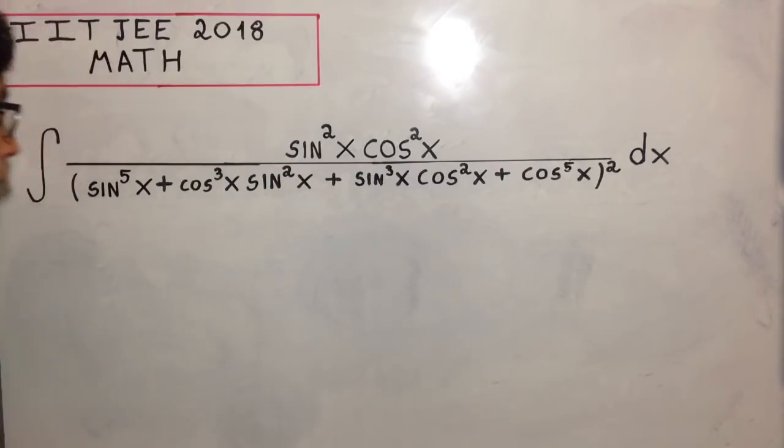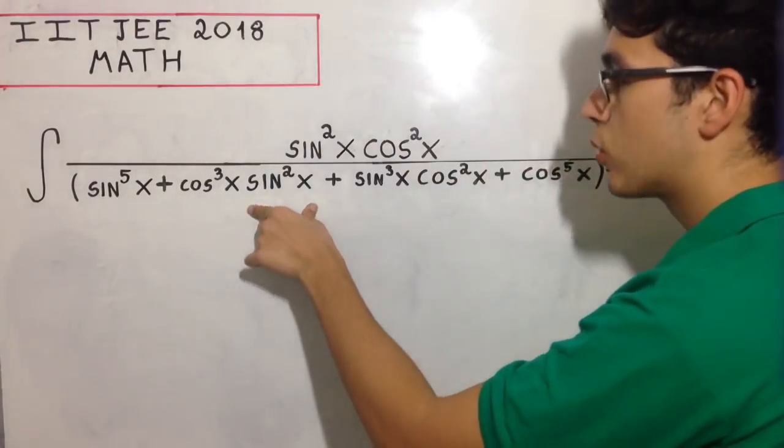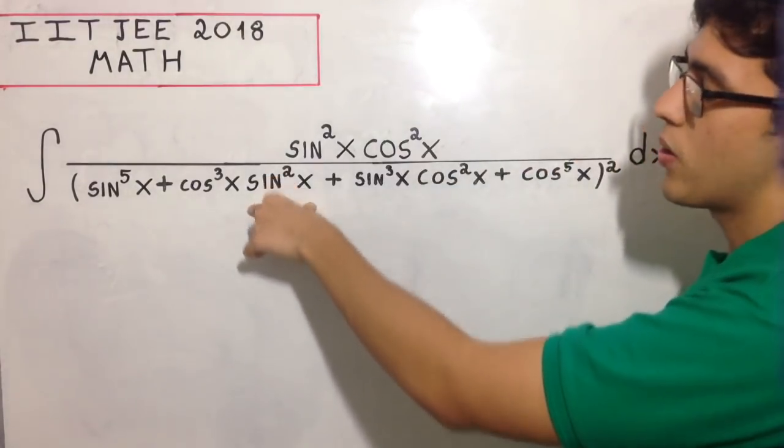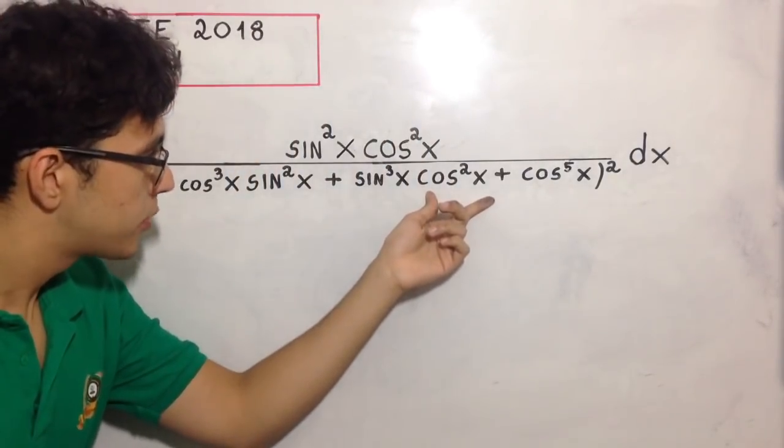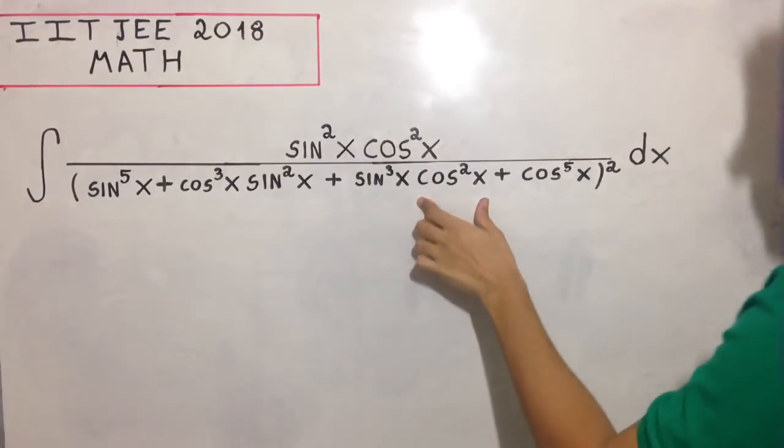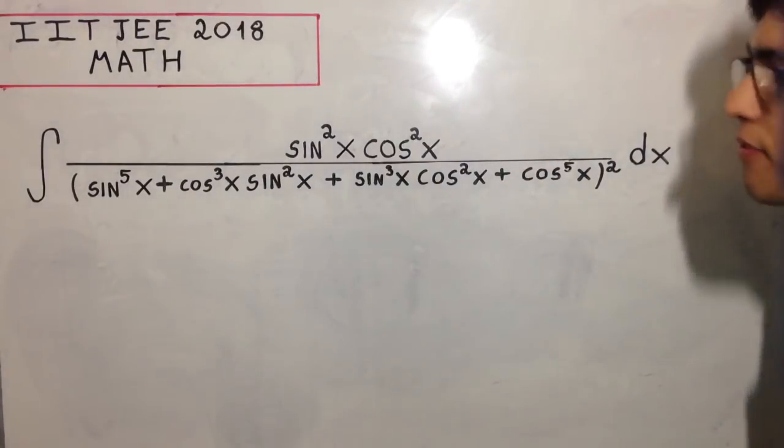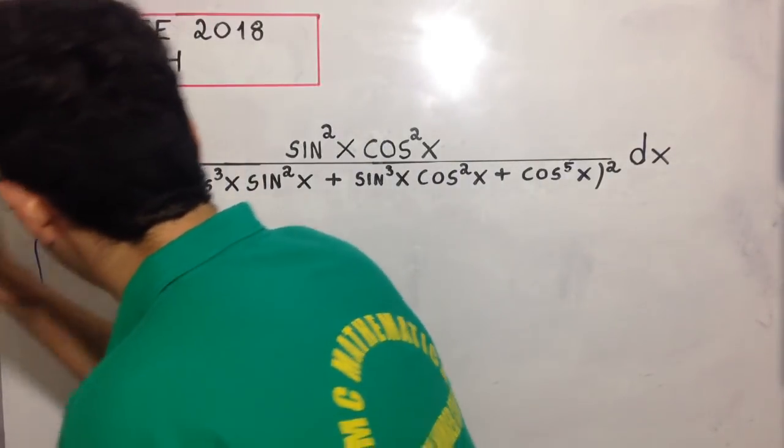This is not so hard because we have sin⁵x and sin²x here, so I can factor out sin²x from this side. I have cos²x here and cos⁵x here, so I'm going to factor out cos²x. This is going to be a very good idea.